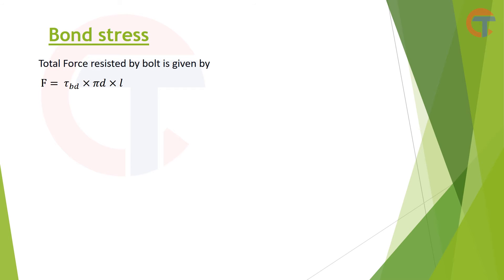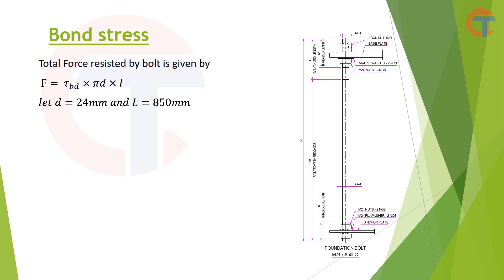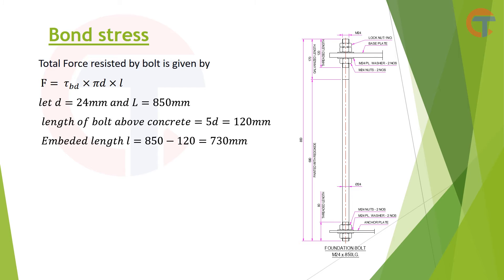Now let's take an example. Assume a foundation bolt M24, 850 mm long. M24 means the diameter of the bolt is 24 mm and total length is 850 mm. The length above the concrete is generally taken as 5 times the diameter, i.e., 5 × 24 = 120 mm. Therefore, the embedment length is 850 − 120 = 730 mm. So the total length of the bolt inside the concrete is 730 mm. We have the diameter, the length, and π — we need the value of τ_BD.